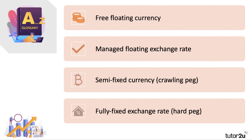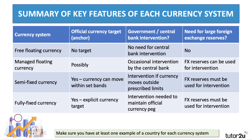If you're revising Year 13 economics, exchange rate systems are important. You can make a case that the exchange rate system a country chooses to operate is one of the most important decisions in macroeconomic policy. There are essentially four main systems to know about: the free floating currency, the managed float, the semi-fixed currency known as the crawling peg, and the fully fixed exchange rate — a hard peg.